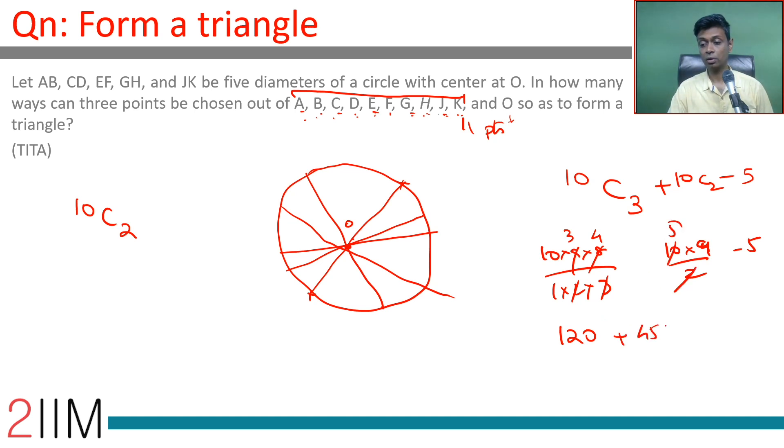You can also imagine this as 11C3: 11 × 10 × 9 divided by 1 × 2 × 3. That's 165 minus 5. That's the other way of thinking about it. Effectively, out of the 11 points, select any 3 and then from that subtract the selections of the 5 diameters. So, 11C3 minus 5, or 10C3 plus 10C2 minus 5.